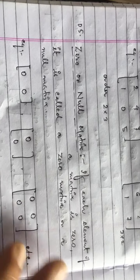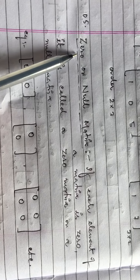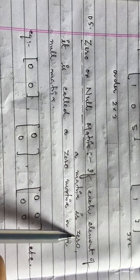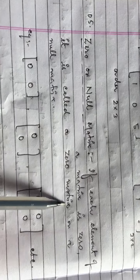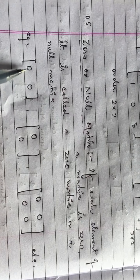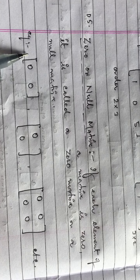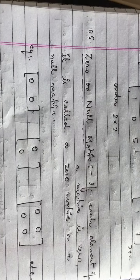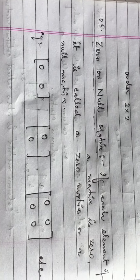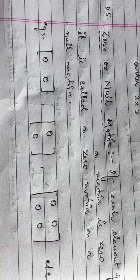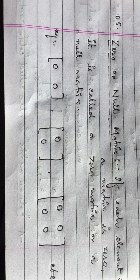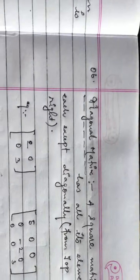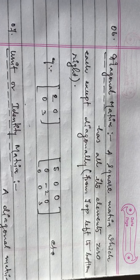Zero or null matrix: If each element of a matrix is zero, it is called a zero matrix or a null matrix. The order can be one by two, two by one, two by two — it doesn't matter whether it is a row, column, or square matrix. If all elements are zero, it is called a zero matrix or null matrix.